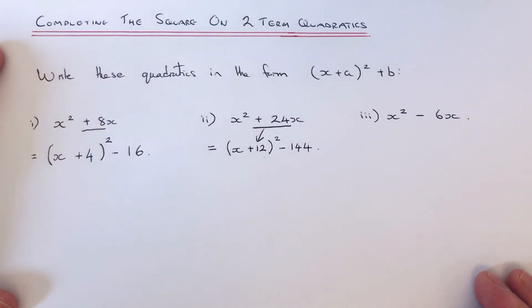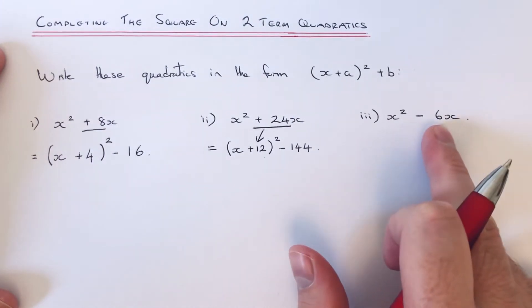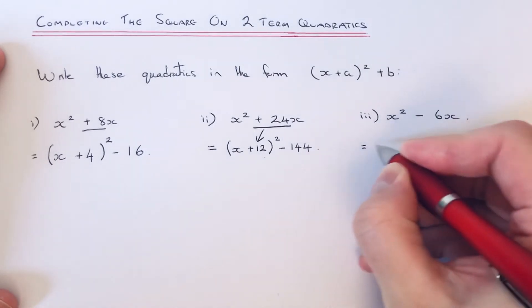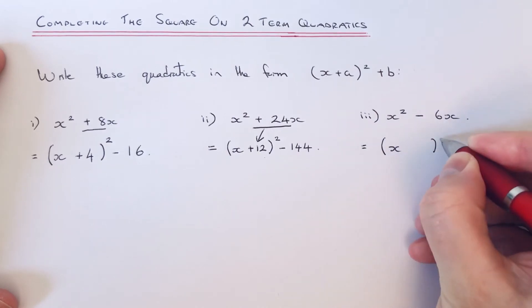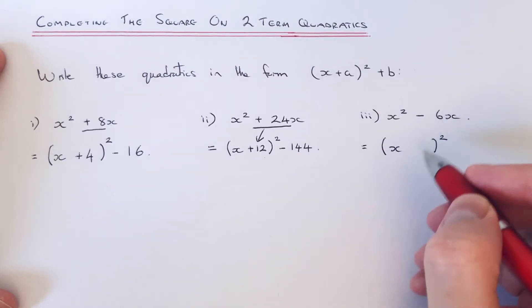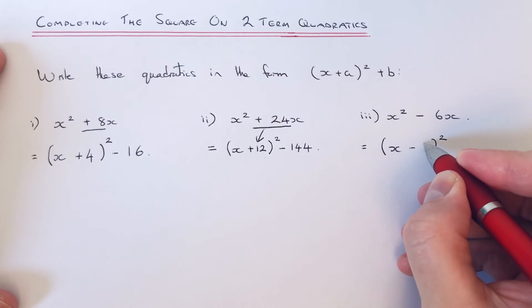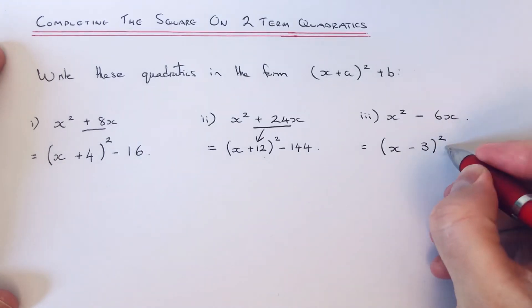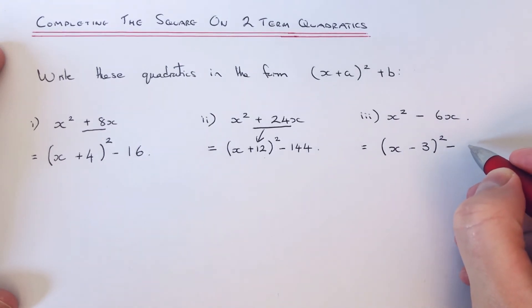Let's do one final example. So this one's a little bit trickier because we've got a minus before the x. So we've got x squared minus 6x. So again, if we start off like that. So half of negative 6 is minus 3. Then what we've got to do is square minus 3. So minus 3 times minus 3 is plus 9. But then we still need to take it off the end. So it's always going to be a minus after the bracket. So the answer will be x minus 3 squared minus 9.